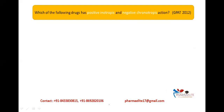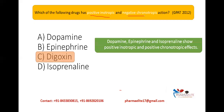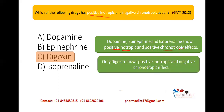This is a question from GPAT 2012: Which of the following drugs has positive inotropic action and negative chronotropic action? The options are Dopamine, Epinephrine, Digoxin, and Isoprenaline. The answer is Digoxin. Dopamine, Epinephrine, and Isoprenaline all show positive inotropic and positive chronotropic effects — they increase both contraction and heart rate — but Digoxin is the only drug that shows positive inotropic and negative chronotropic effect.